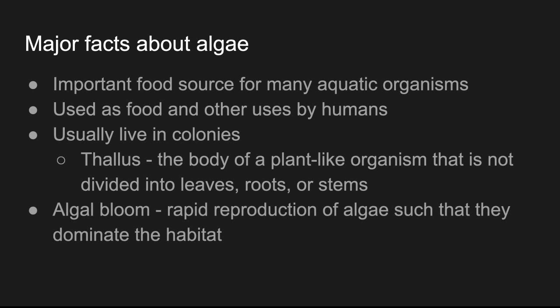An algal bloom refers to rapid reproduction of algae such that they dominate the habitat. This would be like some algae that starts out in some population, and then conditions are right so that the algae can grow. They grow so quickly and so pervasively that they overwhelm the habitat and can actually kill everything else there.